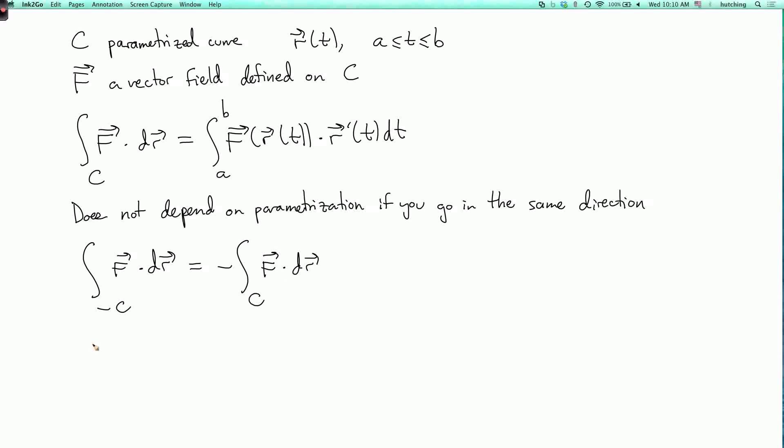Okay, and also recall that f is conservative if f is the gradient of some function. So f is the gradient of little f for some function f. And I forgot to say this before, the reason why it's called conservative, it's not about politics. It has to do with conservation of energy for reasons which we'll see shortly.